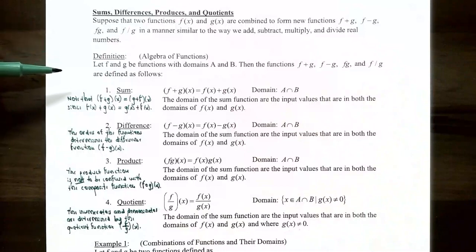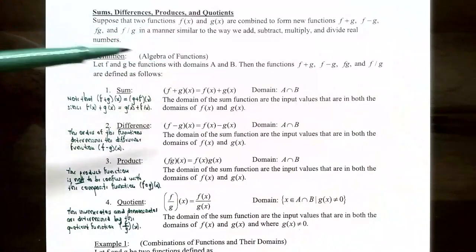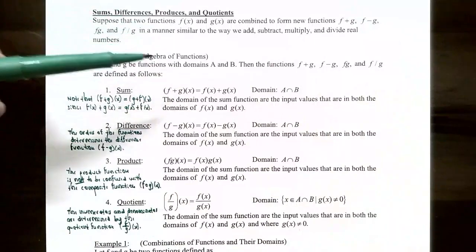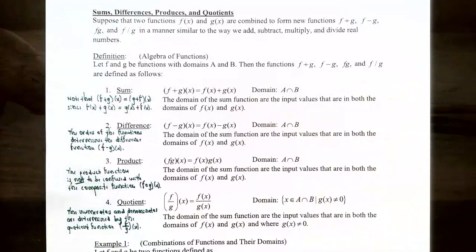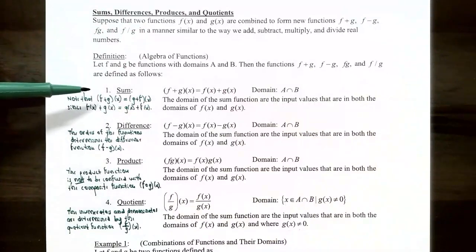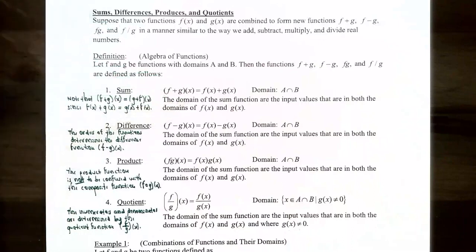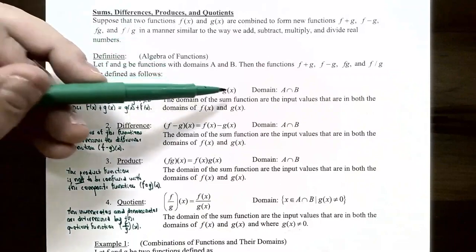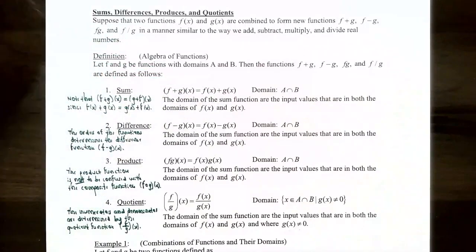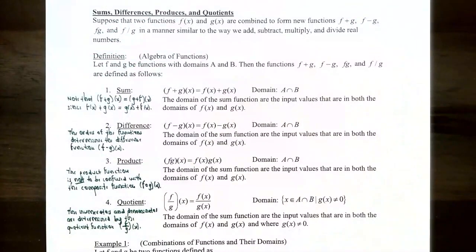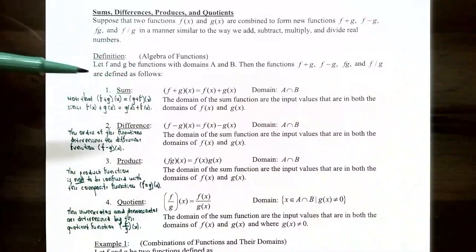Let's talk about the algebra of functions. The definition: let f and g be two functions with domains A and B respectively, so the domain of f is A and the domain of g is B. The sum function, f plus g, evaluated at x is defined as f of x plus g of x. The domain of this sum function is the intersection of the domains of f and g — the x values that are in common in both domains.